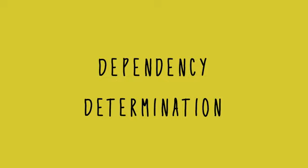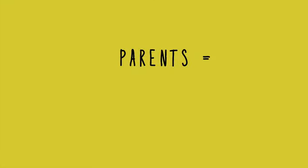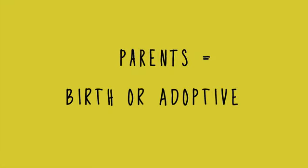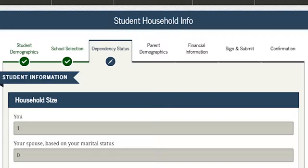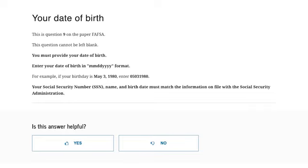The next section is called Dependency Determination. This section will determine if you need information from your parents. For the FAFSA, parents are defined as your birth or adoptive parents. You should answer questions based only on your birth or adoptive parents, and on no other persons. Note that if you answer yes to any question in the Dependency section, you will not need parental information. Some questions will already be answered based on previous information entered. The FAFSA has some specific definitions, so if you don't know how to answer a question, use the question mark to get a more detailed explanation.